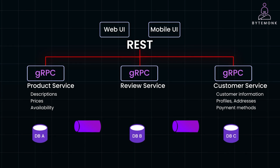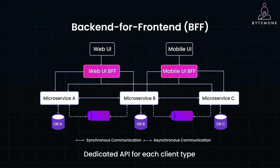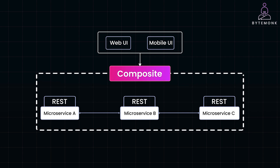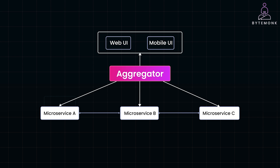To address these challenges, there are several API design patterns you can consider. The BFF (Backend For Frontend) pattern creates a dedicated API for each client type — like mobile, web, or desktop — ensuring that each client gets exactly what it needs, though managing multiple BFFs can itself become complex. The Proxy pattern acts as a simple pass-through for requests between the client and backend services; easy to implement, but offers little optimization or customization. The Composite pattern combines responses from multiple services into a single response, reducing client requests but potentially introducing coupling between services. The Aggregator pattern is similar to the Composite pattern in reducing client requests, but is broader in scope and used specifically within microservices architecture.